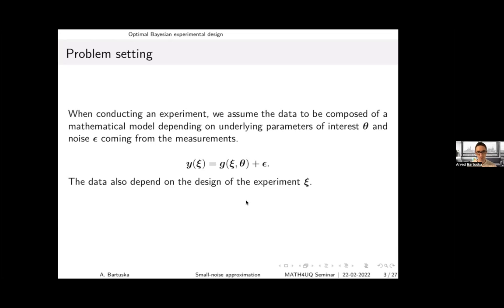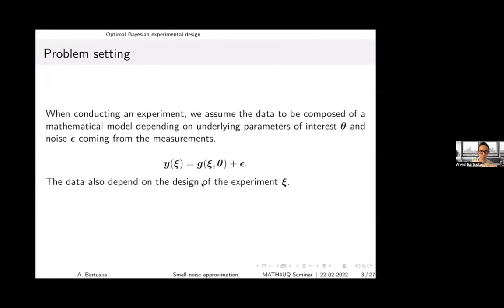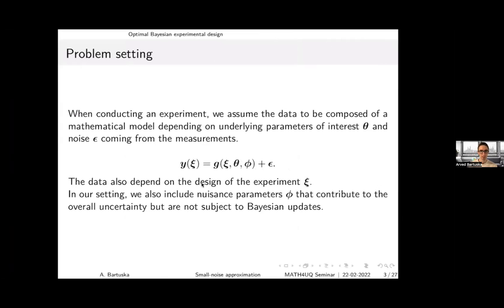For example, if you measured at the same spot 50 times and nowhere else, chances are you won't find interesting results. Clearly you can choose an optimal design, and this is the task we follow. We make our lives slightly harder by assuming the model depends not only on parameters of interest but also on other parameters.